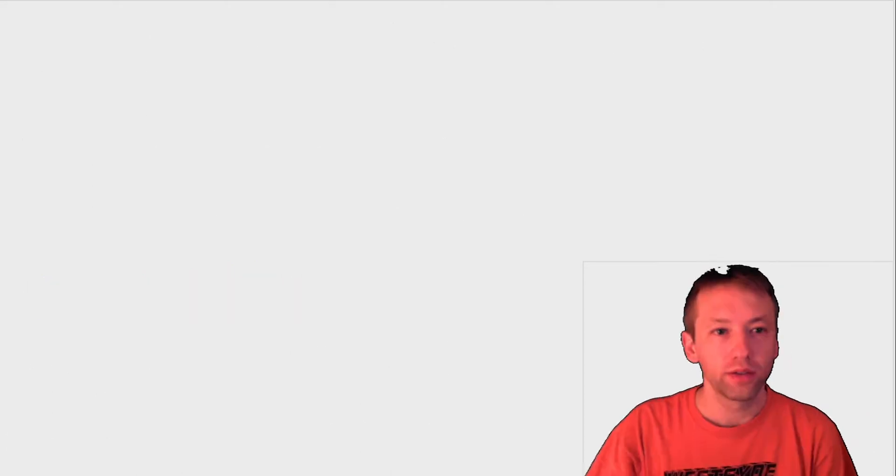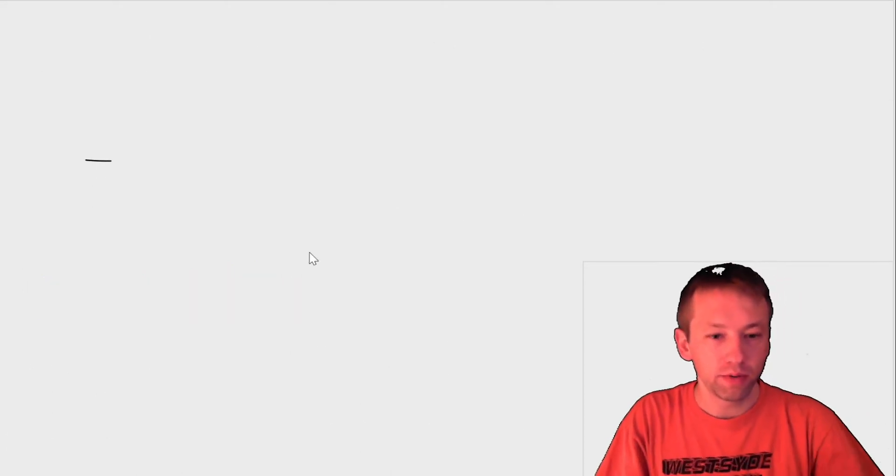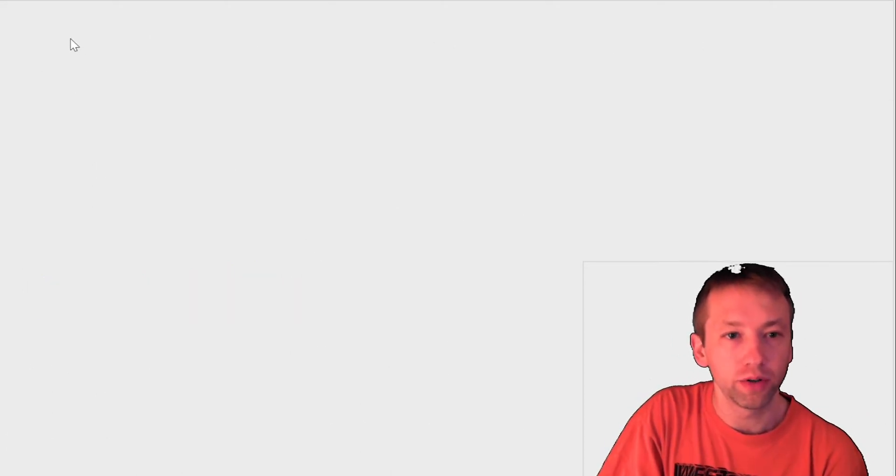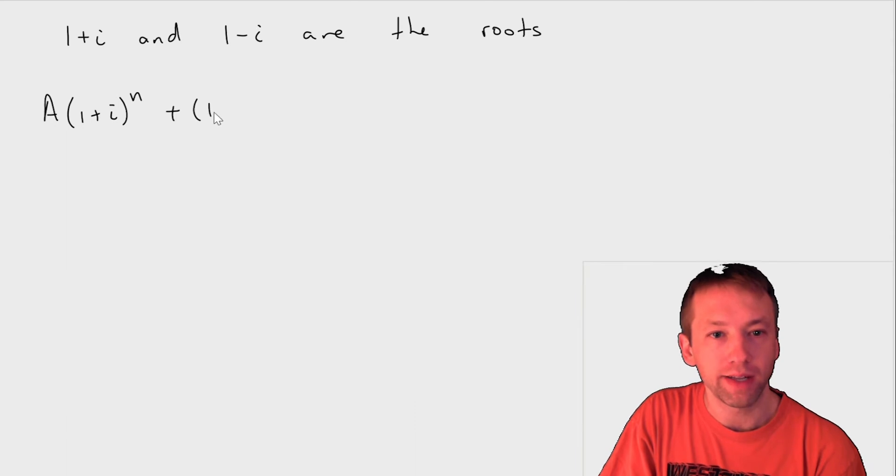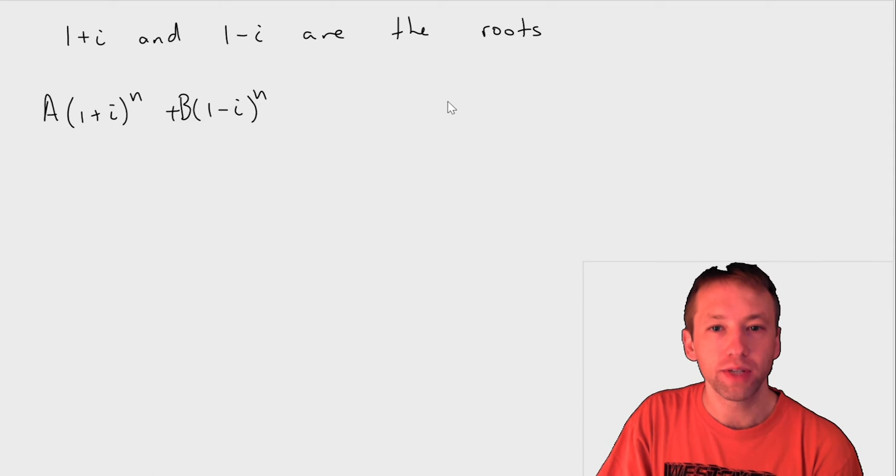So let's see an example where that happens. So as an example, suppose that you get that your roots are 1 + i and 1 - i. So then your general solution looks like A times (1 + i)^n plus B times (1 - i)^n. And suppose I tell you that I have initial conditions a_0 = 2 and a_1 = -2.